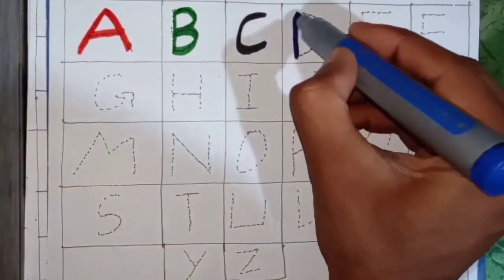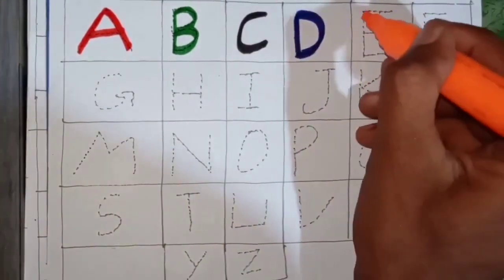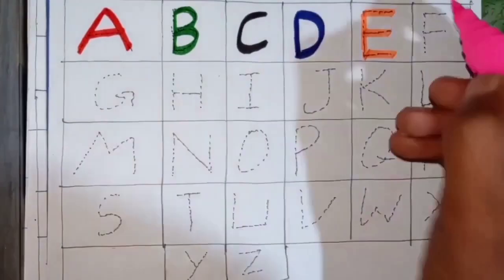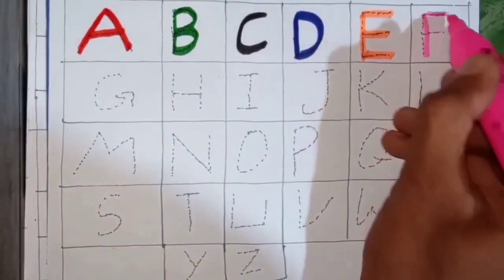Blue color. D. D for Dog. Orange color. E. E for Elephant. Pink color. F. F for Fish.